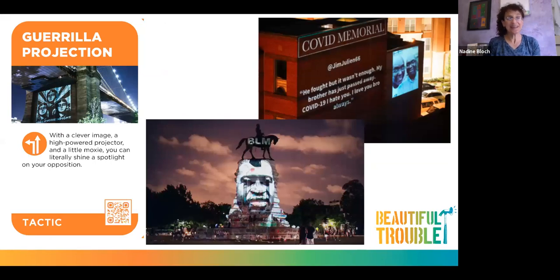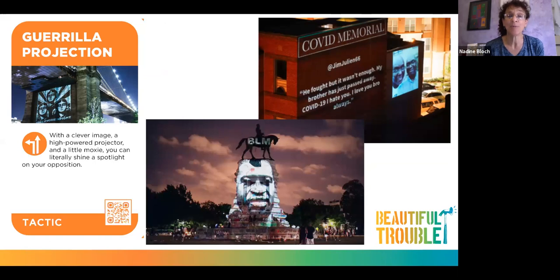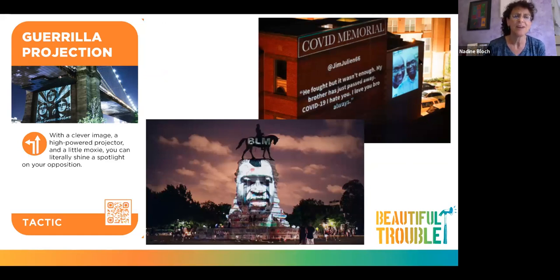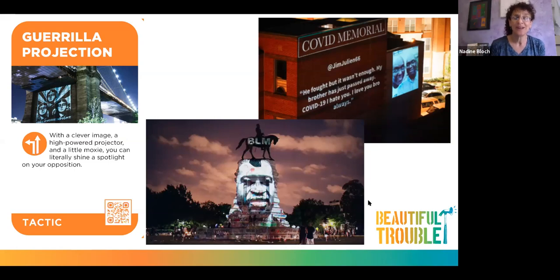Here's another tactic: Gorilla Projection. We've seen it used particularly during COVID in very effective ways. You might recognize the upper right-hand image — it's from the COVID memorial collecting stories of those who have died nationally. You could also see this as making the invisible visible, honoring the costs to our families and loved ones. The gorilla projection on the Robert E. Lee statue in Richmond with George Floyd's picture on that statue was so powerful — reclaiming that memorial.